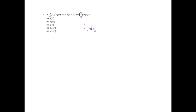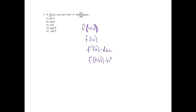d/dx means take the derivative. With f of h of x, I'll let u equal h of x and apply the chain rule. The derivative of f of u is f prime of u times du. Plugging back in: f prime of u is evaluated at h of x, and the derivative of h of x is h prime of x. h of x was given as x squared, so the derivative of x squared is 2x.